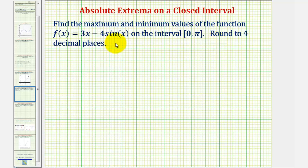We want to find the maximum and minimum values of the function f(x) = 3x - 4sin(x) on the closed interval from zero to pi radians, and we want to round the final answers to four decimal places. The directions may also say find the absolute extrema on the closed interval.